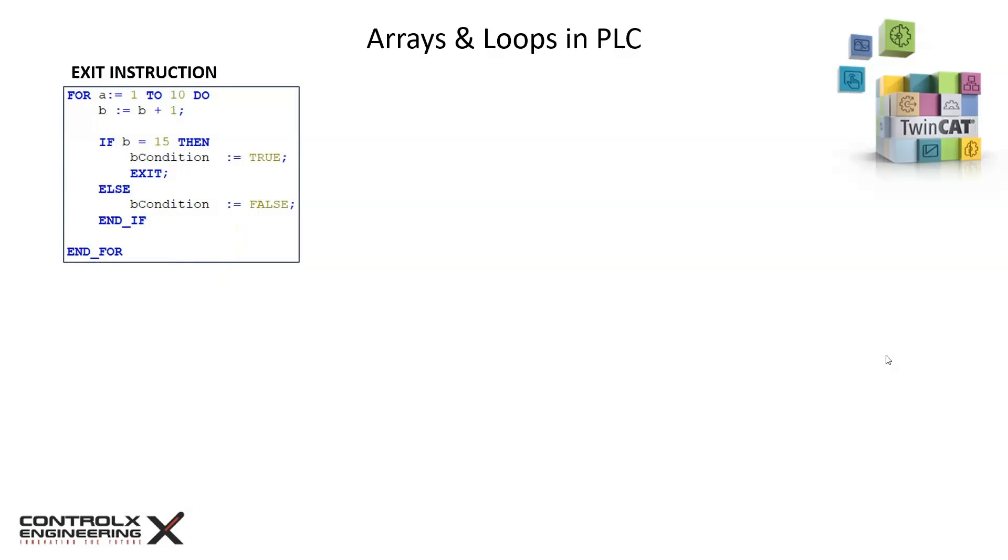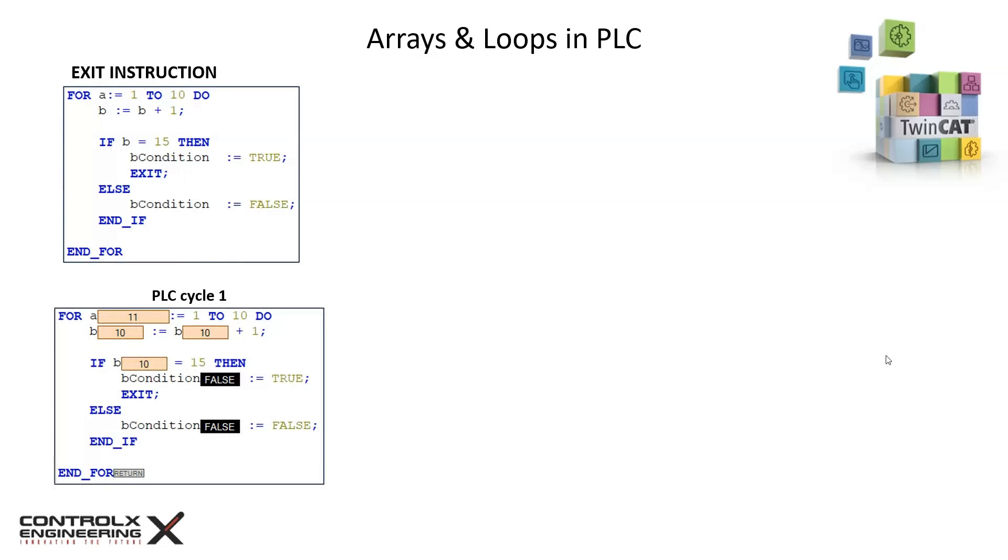Let's see the execution of the PLC one cycle at a time. At the end of the first cycle, b has incremented one at a time and reached a final value of 10 at the end of the for loop.